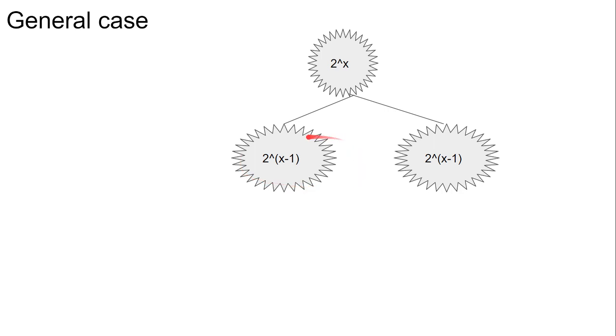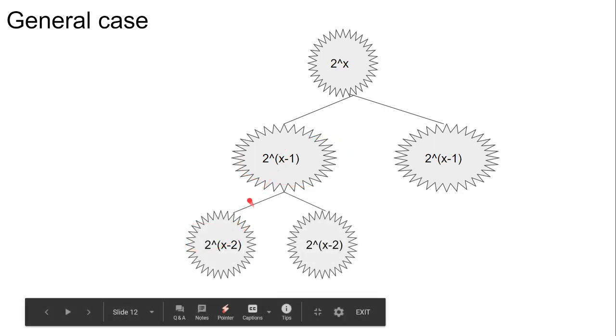Then we can split one of them again into two networks of size 2^(x-2). This can be done recursively; it's like a binary tree.